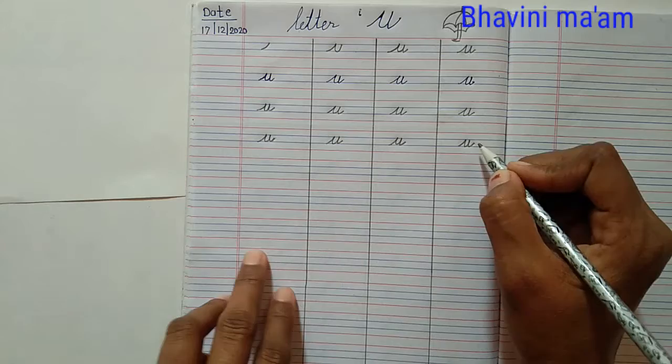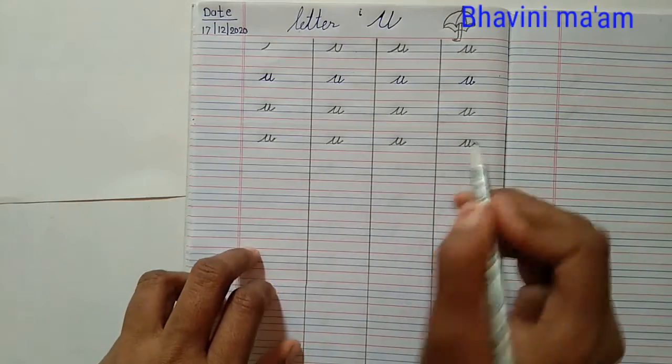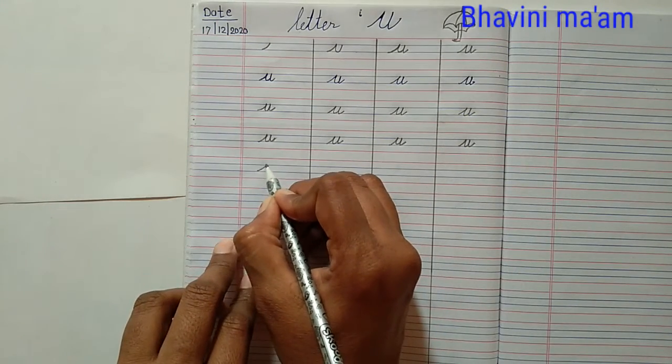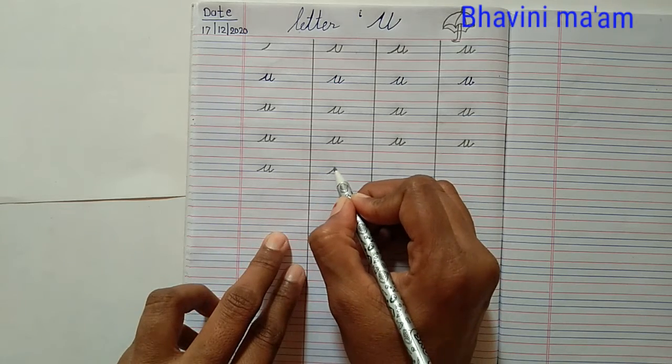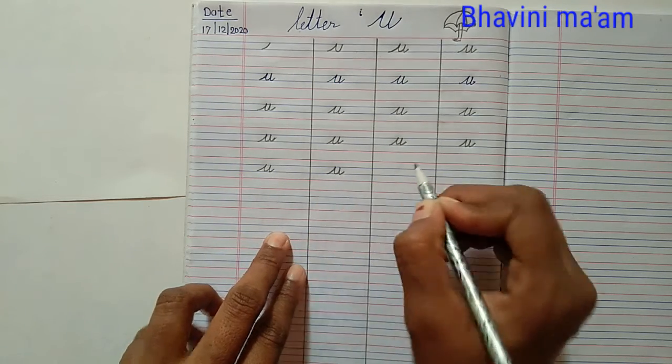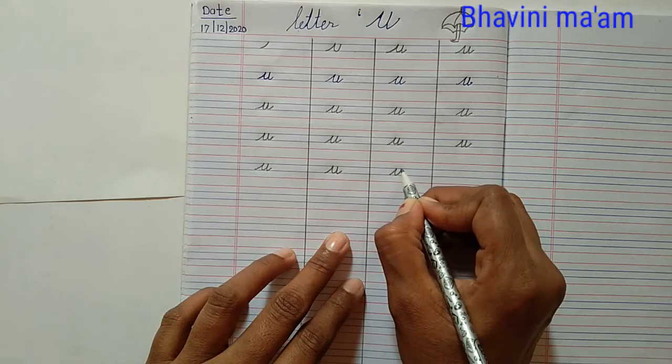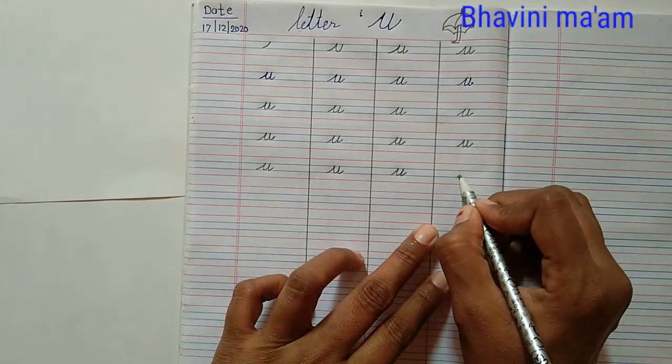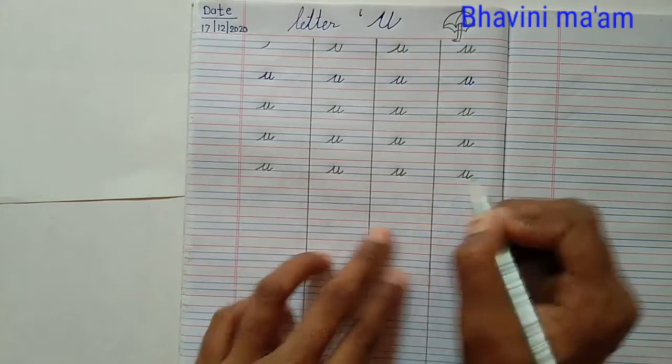U for Umbrella. U for Umbrella. U for Up. U for Empire. U for Utensil. U for Uniform.